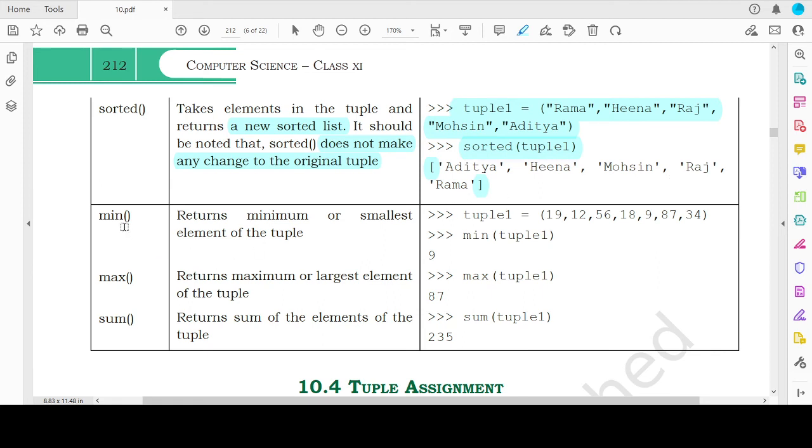Then the last three functions, they are very simple functions as we have seen them for the list also. Tuple data type also supports finding the minimum value present in the tuple, the maximum value present in the tuple and the sum of elements present in the tuple. So if this is a tuple, you can find the min of the tuple as 9, the maximum value out of this should be 87 and the sum of the integral values present in the tuple would be 235 here.